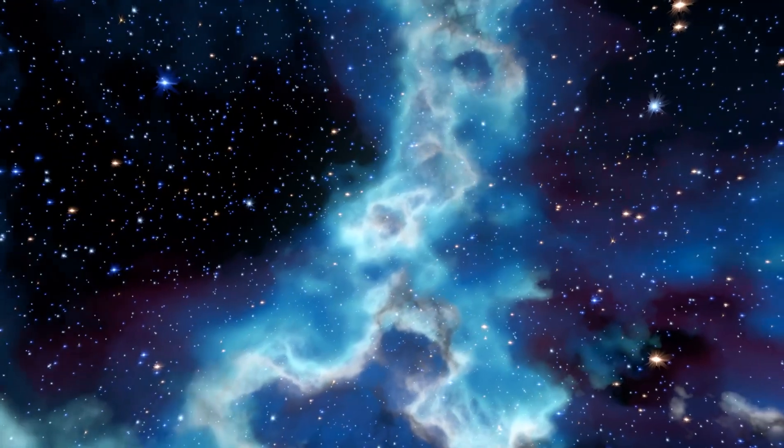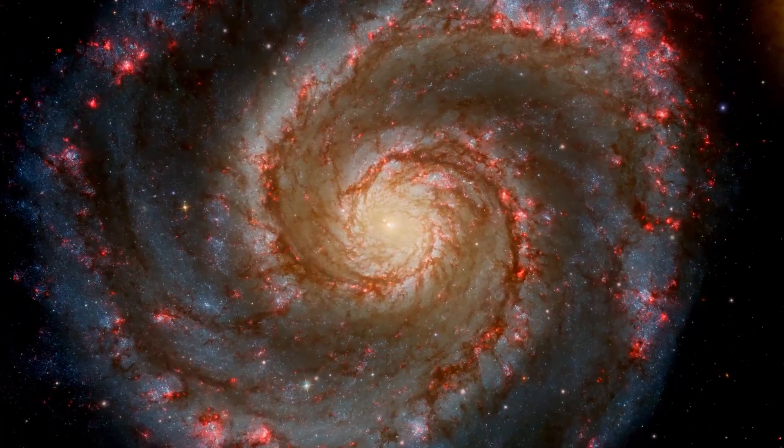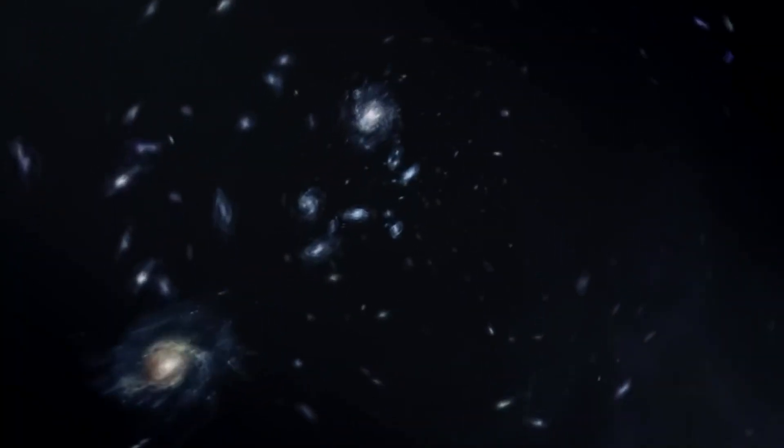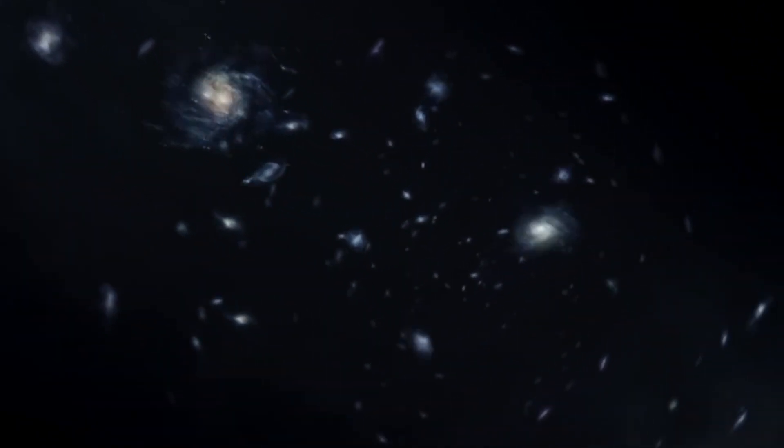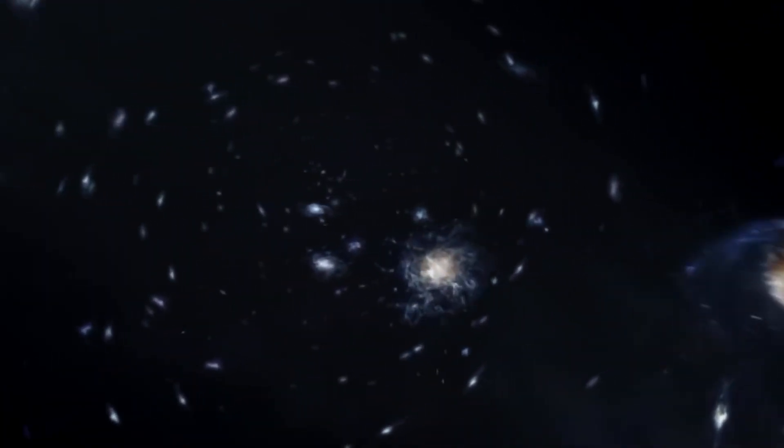Some parts were crowded, and others vacant. Galaxies have a web-like structure. The vast majority of galaxies in our universe may be found in lengthy filaments spiraling across space.